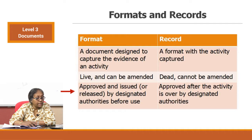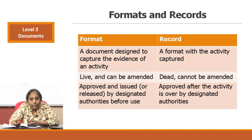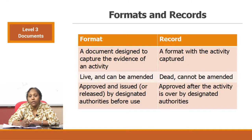Formats are approved and issued by the designated authority before use, and records are approved after the activity is over by the designated authority. For example, if you want to capture quality control results, a format has to be designed and approved by the appropriate authorities and issued to the laboratory technician. After running the QC, the results are documented and brought to the technical supervisory staff who signs it. So approval happens before the activity for formats, and after the activity for records, but in two different ways.